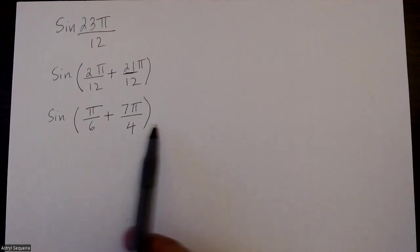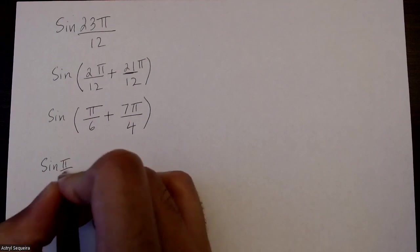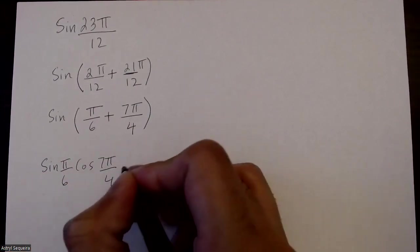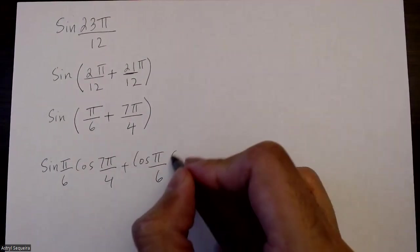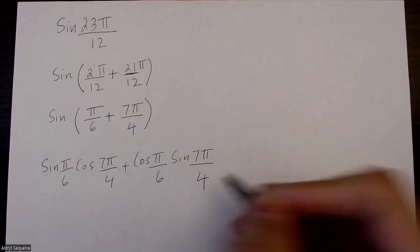Now I want to use my addition formula to break this down. So sine π over 6 times cos 7π over 4 plus cos π over 6 times sine 7π over 4.